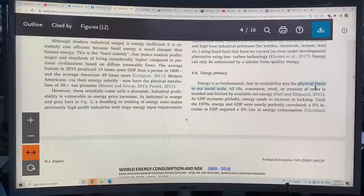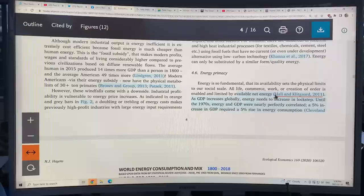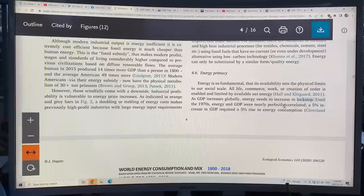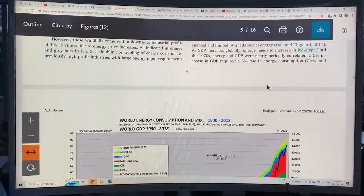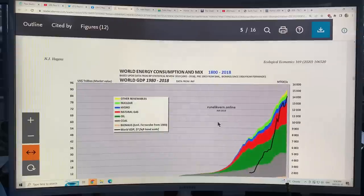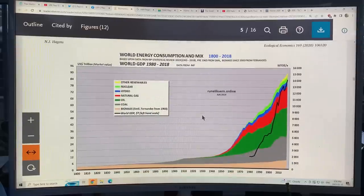All life, commerce, work or creation of energy is enabled and limited by available net energy. As GDP increases globally, energy needs to increase in lockstep. Until the 1970s, it was perfectly correlated. A 5% increase in GDP needed a 5% rise in energy consumption.